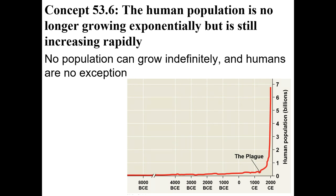Human population growth. You can see from this curve that what we've got here is a J-shaped curve. J-shaped curves, as we learned before, represent exponential growth rate, and we have been increasing exponentially since about 1650.